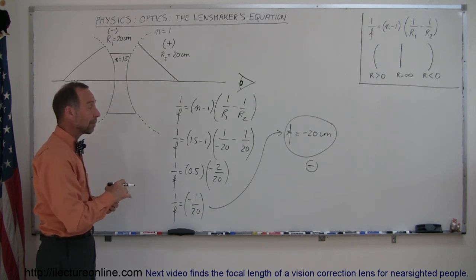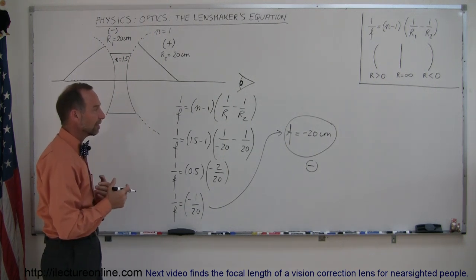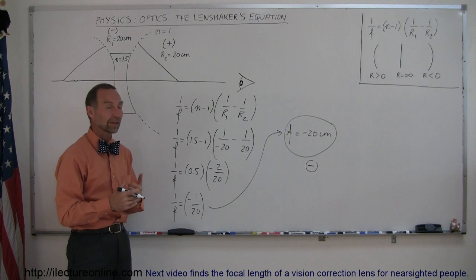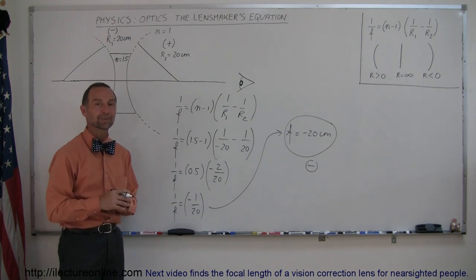And our final example is going to be a lens that we typically use for people who need vision correction, who need to see far, for nearsighted people. See what that kind of lens looks like. Alright, on to the next example.